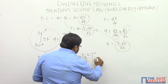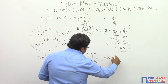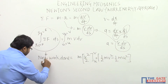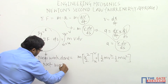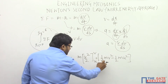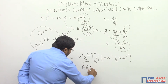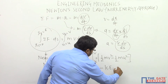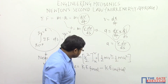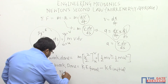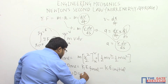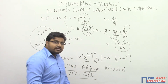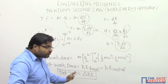Putting in the limits, we get half·m·v² minus half·m·u². So net work done equals the final kinetic energy (half·m·v²) minus the initial kinetic energy (half·m·u²). Basically, net work done equals ΔKE, the change in kinetic energy. If we can find net work done on the body, we can always determine the change in kinetic energy — both terms are equal.